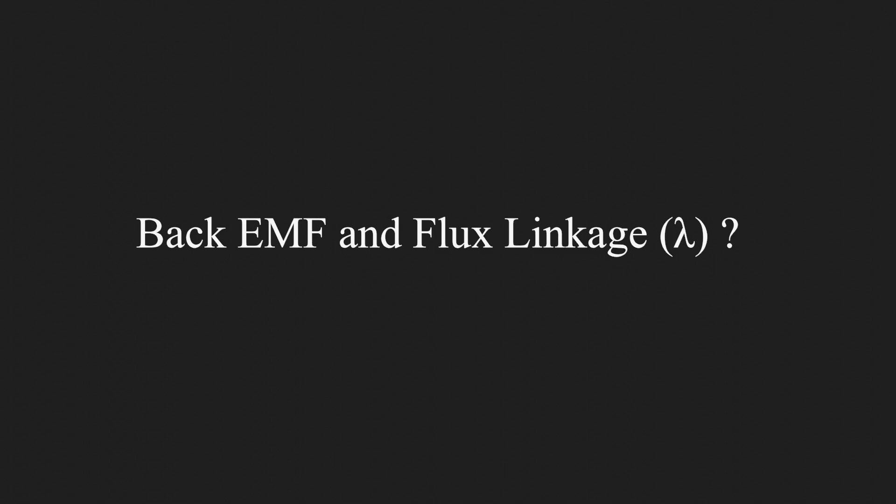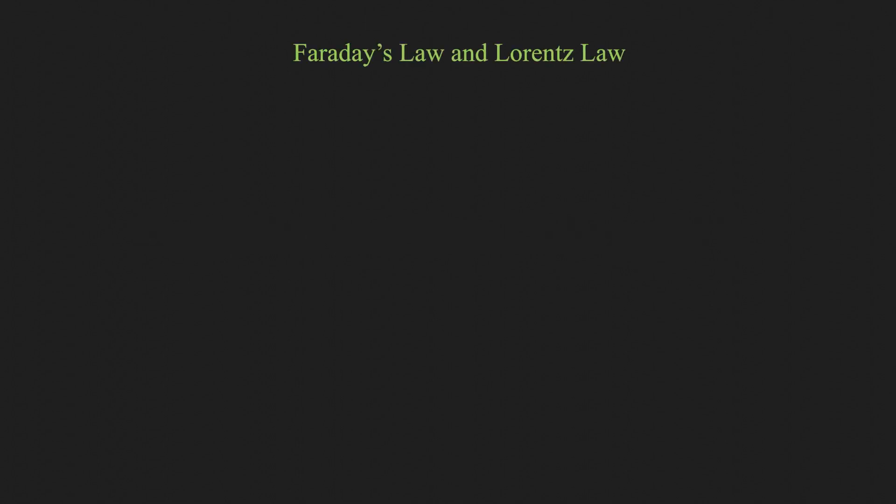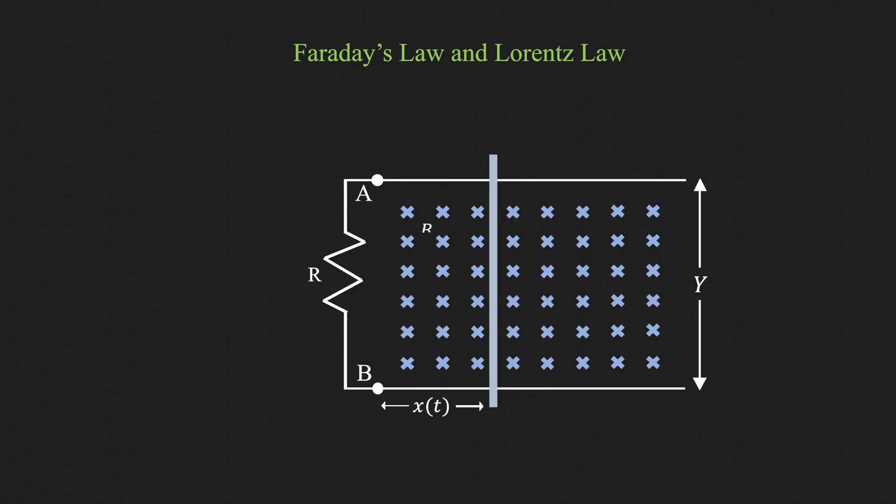We will first look at the fundamental physics principles of Faraday's law and Lorentz law through this setup. We have a closed-loop electrical circuit formed by the conductors and a metal rod which can be moved horizontally. We have a magnetic field density B, constant in both space and time which is perpendicular to the plane.